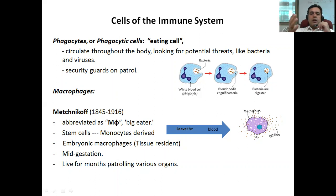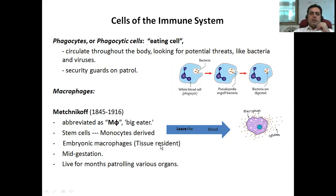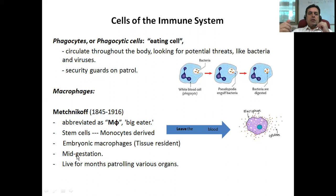These are monocyte-derived macrophages that enter from the blood into the tissues. On the other hand, there are embryonic macrophages, also known as tissue resident macrophages. The tissue resident macrophages are always there right from the initial stages when the embryo is being formed. These macrophages are present in the fetus around mid-gestation — you can find these macrophages of embryonic origin in the embryo, in the fetus.